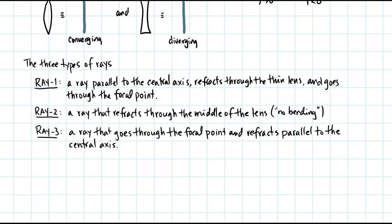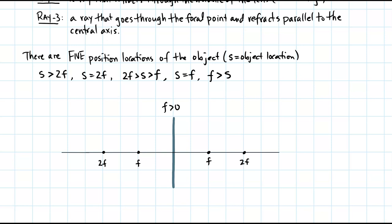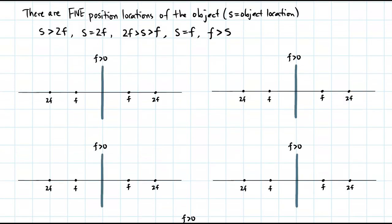There are five possible locations for an object: outside of 2F, at 2F, between 2F and F, at F, and inside the focal point. I will now go through each of these five cases. Case one: when S is outside of 2F.